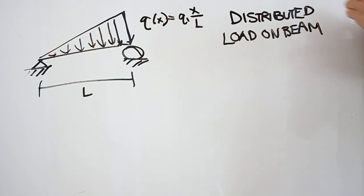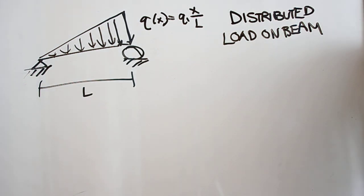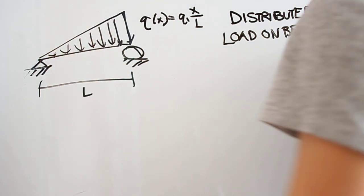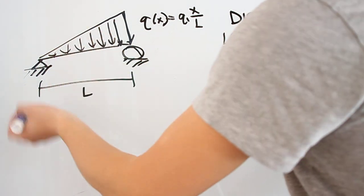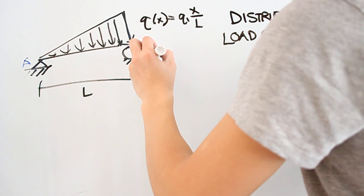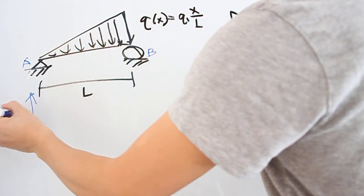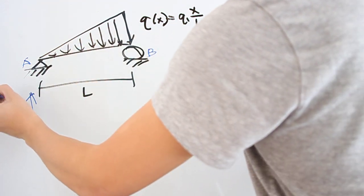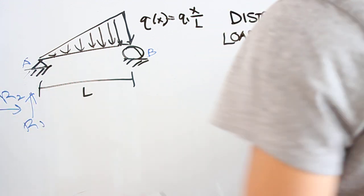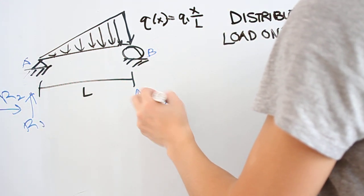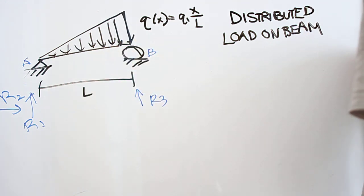We approach this kind of problem the same way as always, which is reassuring because even with different loads and different connections, the method stays consistent. At point A we have vertical and horizontal reaction possibilities, and you can already imagine r2 is going to be 0. At point B you have r3 only in the vertical direction, because it's a roller.